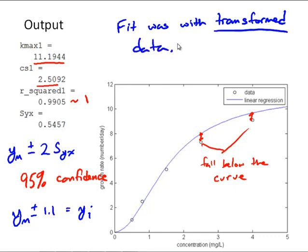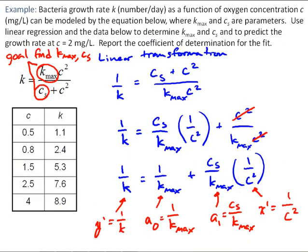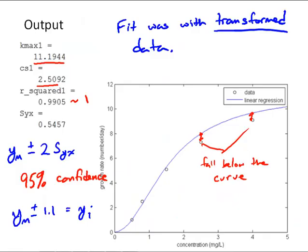But the key that's happening here is recall that the fit was with the transformed data. And if we go back to the model and we look at that transformed data, we're fitting 1 over K. That was our transformed data. So when we go back to calculate K, as K gets larger and we move out here where K is larger, that fit is not quite as accurate when we go back to the nonlinear model. And we'll talk about this more in an upcoming video.